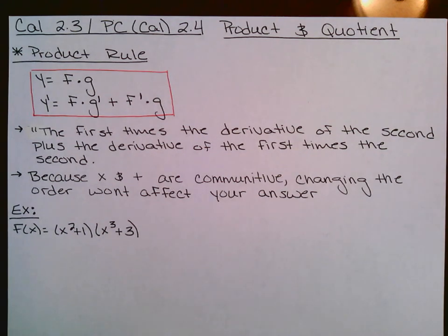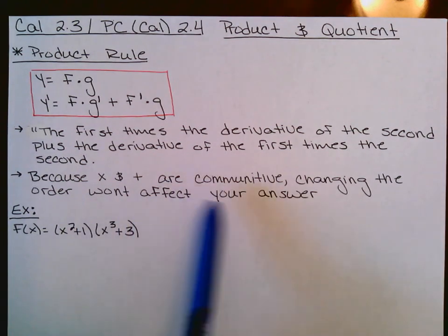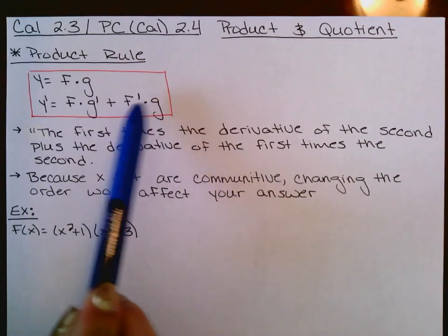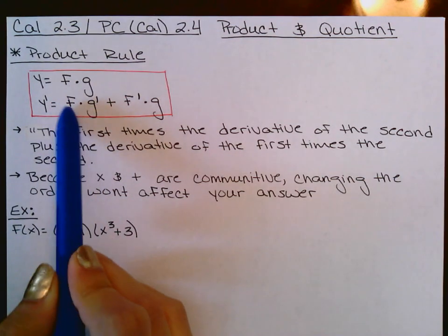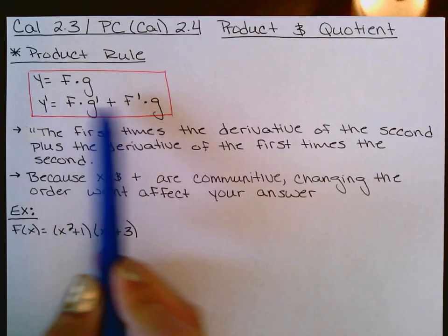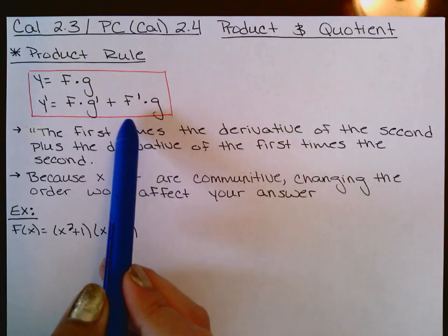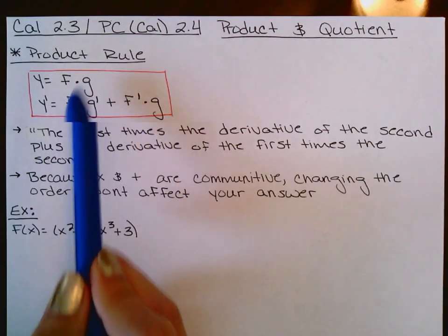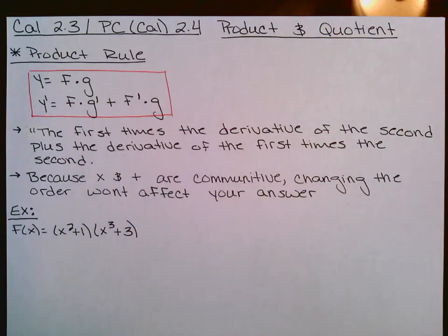Because multiplication and addition are commutative — meaning you can change the order without affecting your answer — you can flip the terms. Some people like to do the derivative to G first, some to F first, as long as on each side the opposite one gets the derivative. In textbooks you may see this as U·V′ + U′·V using different symbols.